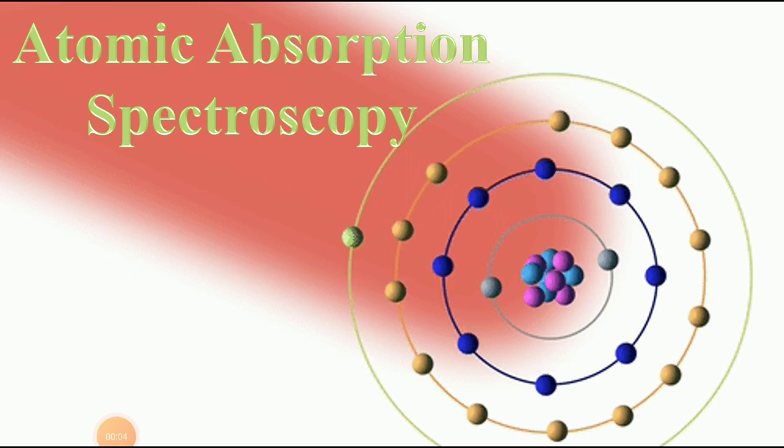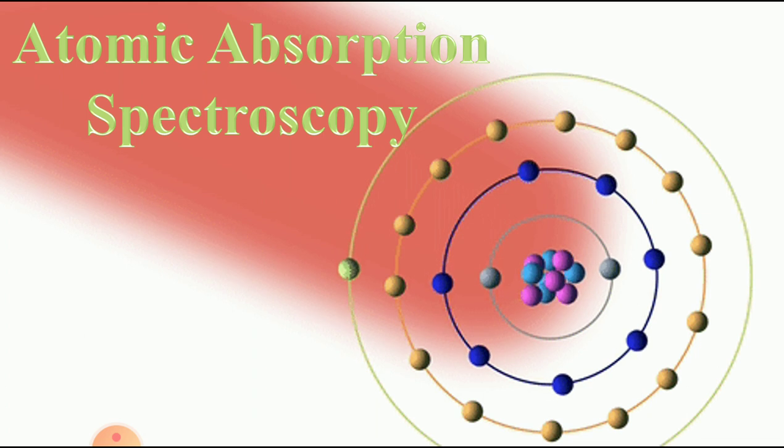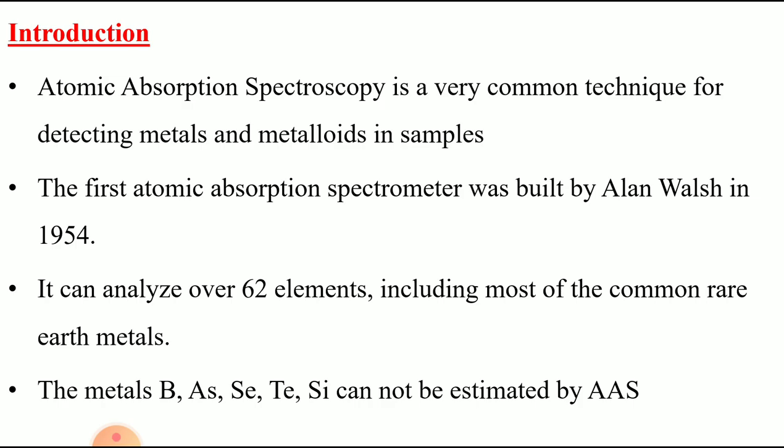We are discussing the topic of atomic absorption spectroscopy. Atomic absorption spectroscopy is one type of spectroscopy technique where absorption takes place at the atomic level. It is a common technique for determination of qualitative and quantitative analysis of metals and metalloids in samples, including trace amounts of metals present in food products and pharmaceuticals.